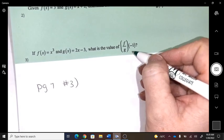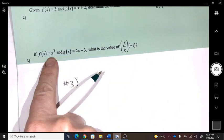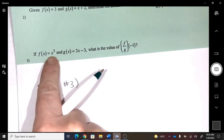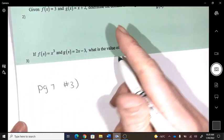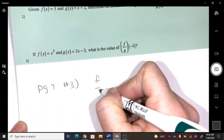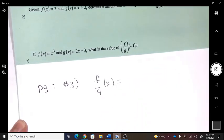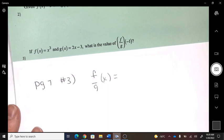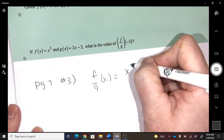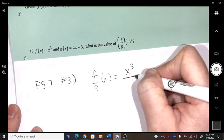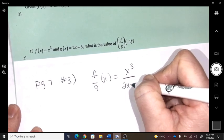So you could do two things. You could get a negative 1, plug it into that, negative 1, plug it into that. Or we could do the division. So if we divide, we would get x cubed divided by 2x minus 3.